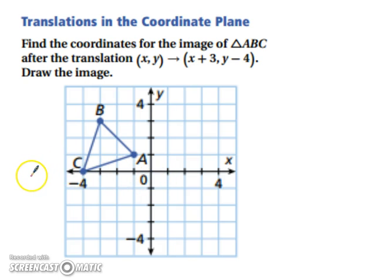Translations in the coordinate plane. So find the coordinates for the image of triangle ABC. After the translation, when you take your (x, y) coordinate and then you're going to add 3 to your x's and then subtract 4 to your y's. Basically, you can think of this as a rule. You're going to, to every one of your x values, you're going to add 3. And to every one of your y values, you're going to subtract 4.